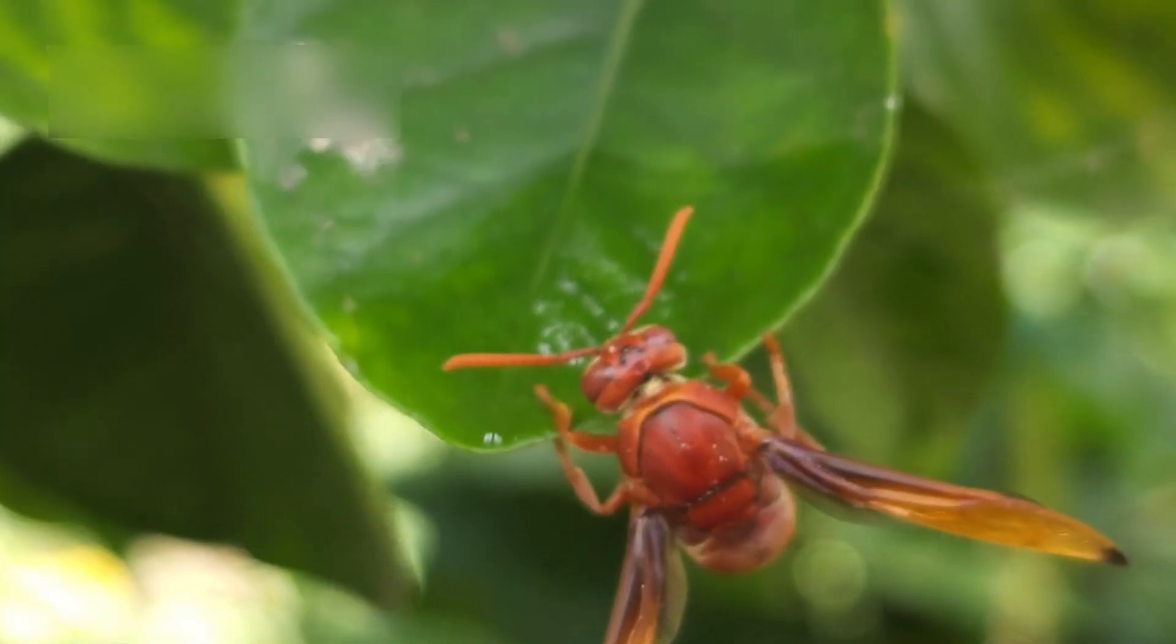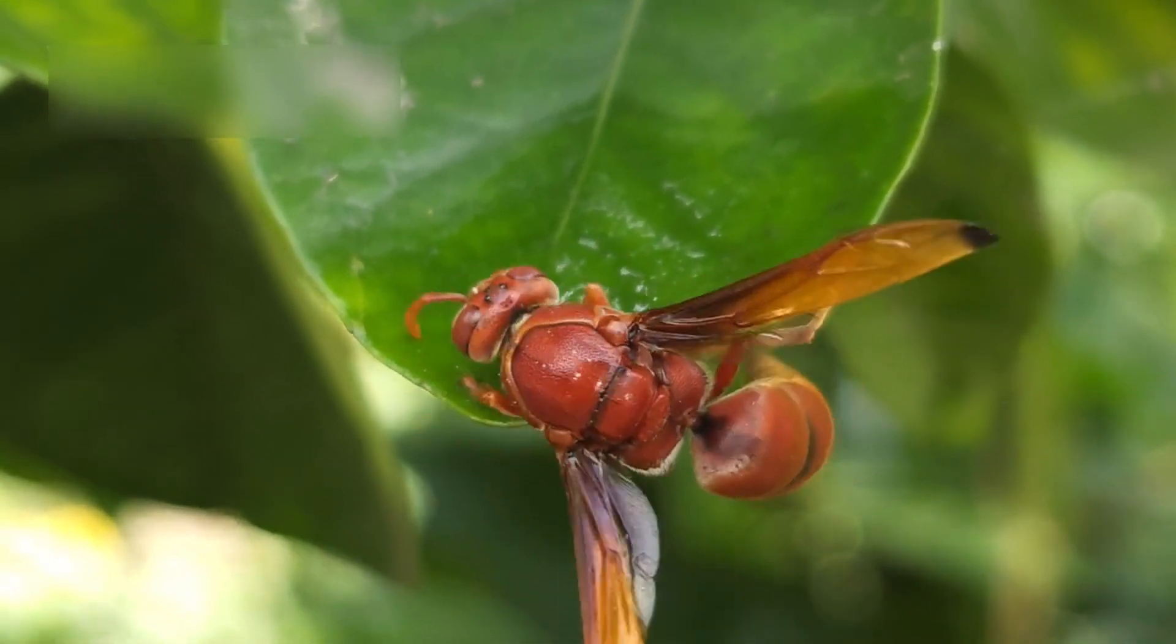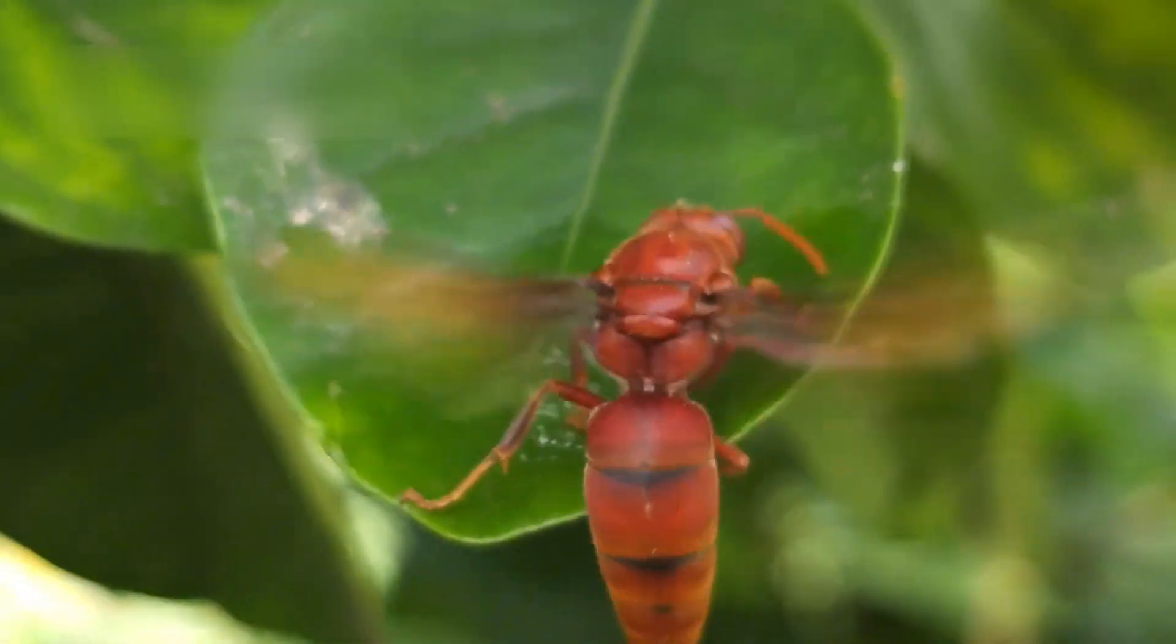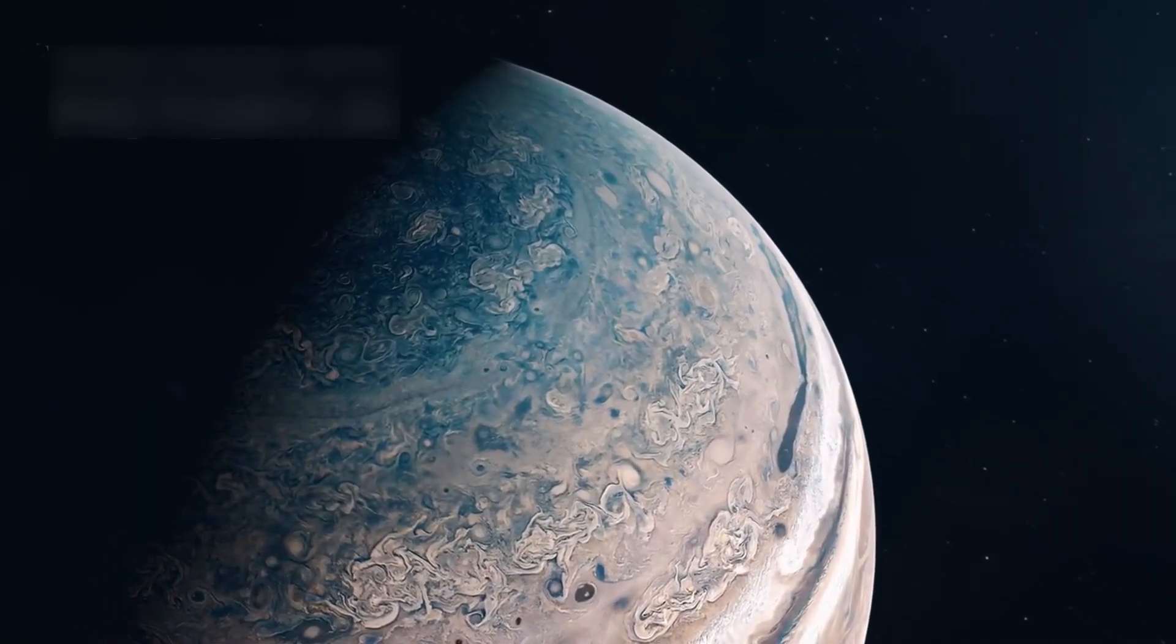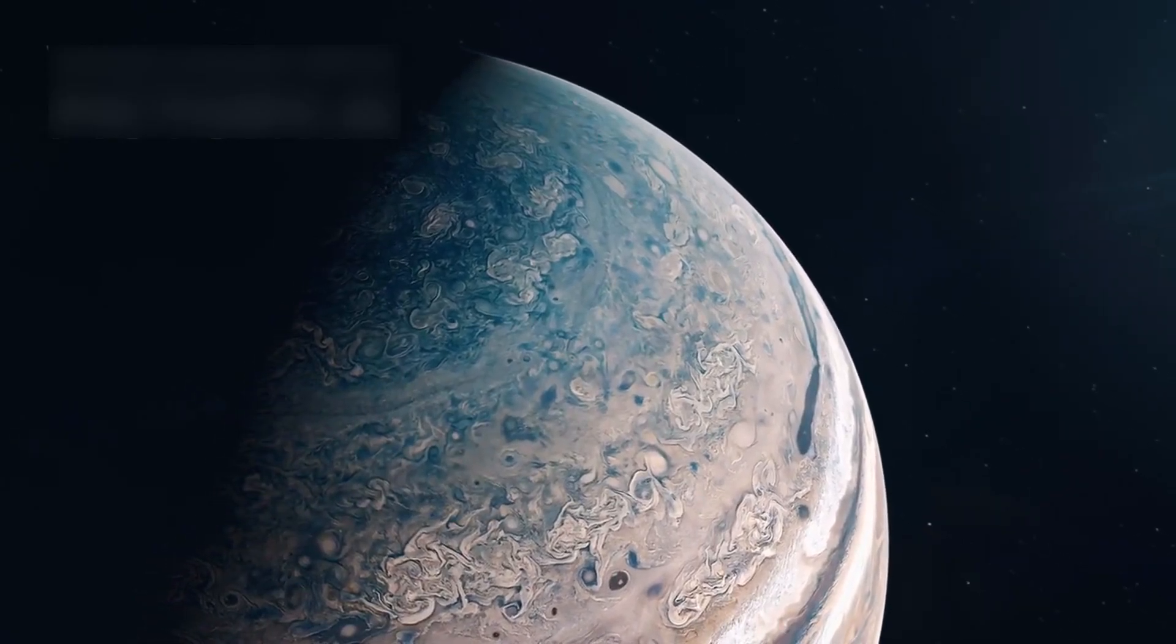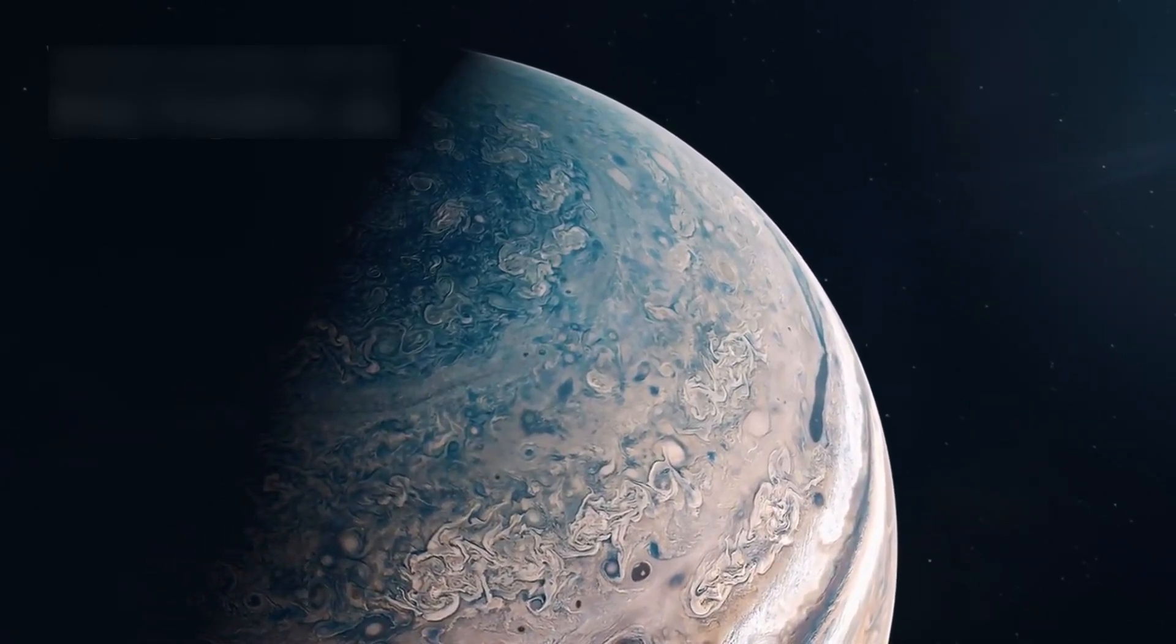A huge discovery was water vapor in the atmosphere of WASP-96b, a distant planet. This gas giant lies 1,150 light-years away and reaches over 1,000 degrees Celsius, yet still holds water.